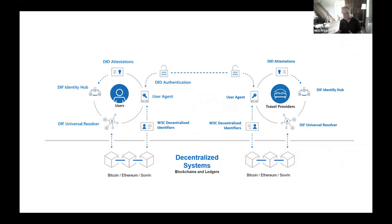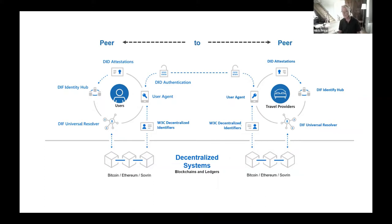An important point: the interaction model enabled by the decentralized technologies and the trusted identities that they support — if it has not yet become obvious — is a peer-to-peer interaction. There are four principal DIF architectural components, and I'm going to go through them, some in more detail than others, starting from the bottom up.